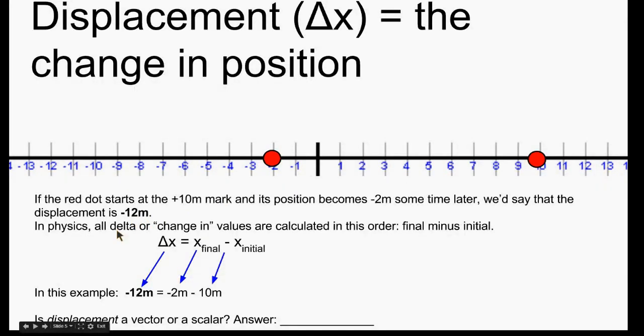Whenever we calculate a change in position or any change in values in physics, we always go final minus initial. In this case, final position minus initial position. The final position is negative 2 meters. It was right there. And we're going to subtract a positive 10 meter value. So that gives us negative 12 meters. So what that means is we are now negative 12 meters away from our original starting point, which was 10 meters.